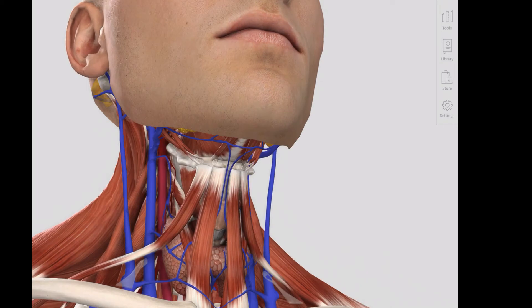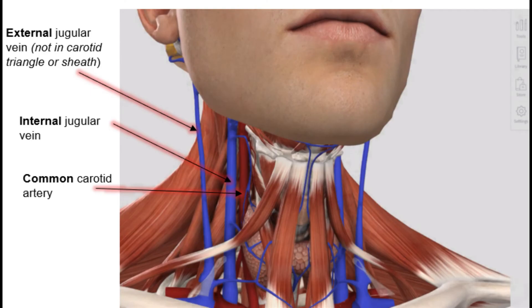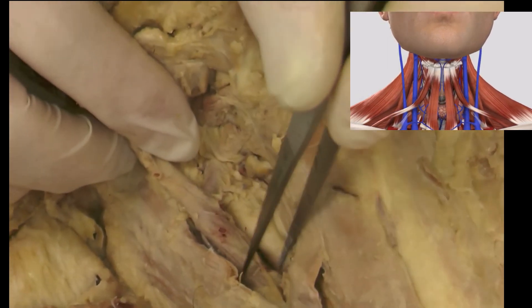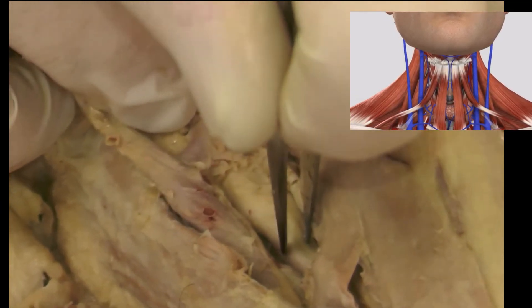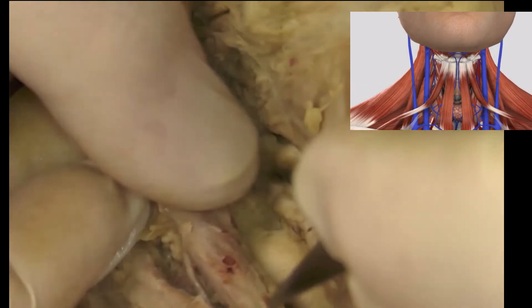A closer look at the right-hand side of the neck reveals the important vascular structures: the common carotid artery and the internal jugular vein lying just laterally. Looking at this same anatomy on the cadaver within the carotid triangle, we can see the common carotid artery lying medially, the internal jugular vein more laterally, and behind the two, sitting posteriorly in the carotid sheath, the vagus nerve.